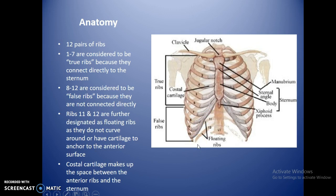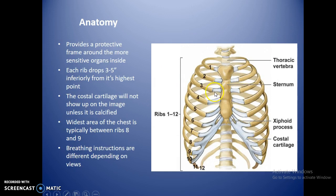Costal cartilage makes up the space between the anterior ribs and the sternum. Those little gray areas you see are the cartilage — it may or may not show up depending on whether it is calcified. This ribcage provides a protective frame around sensitive organs on the inside: the heart, liver, part of the stomach, pancreas, and more.